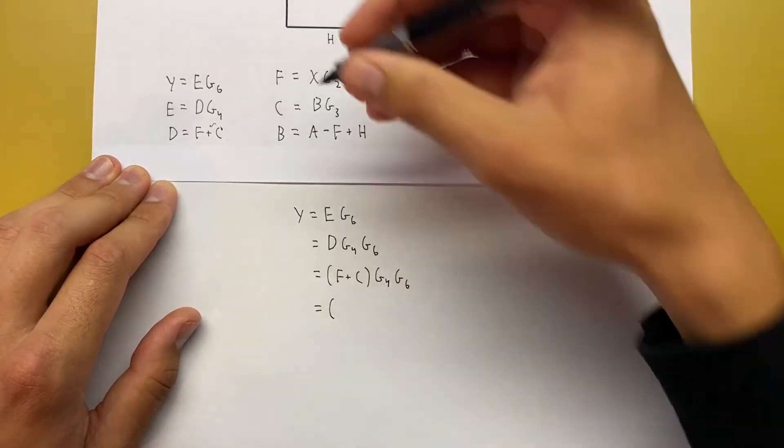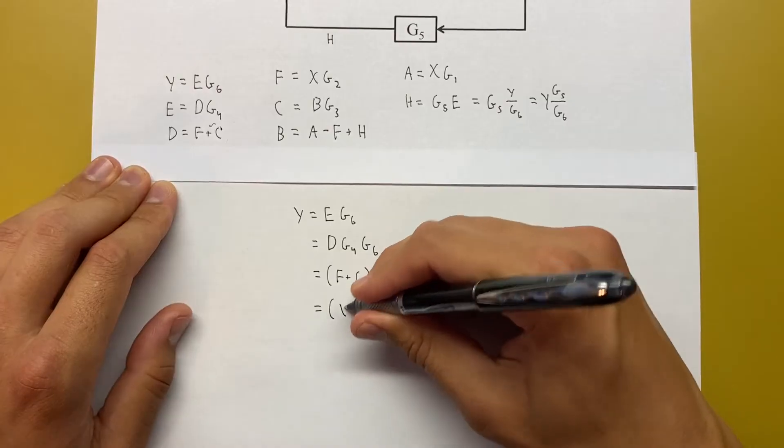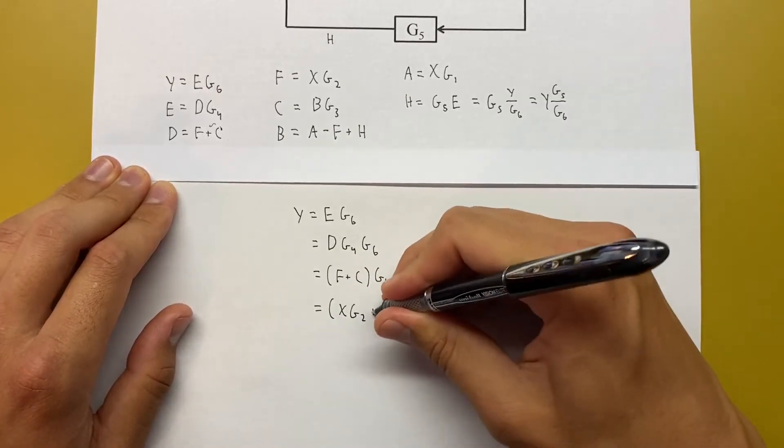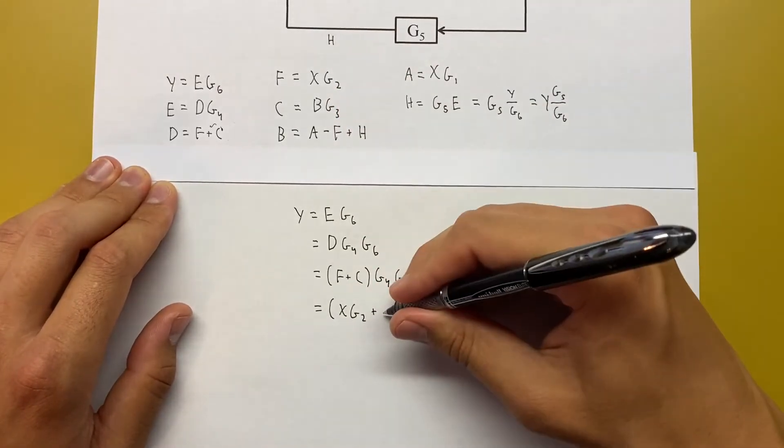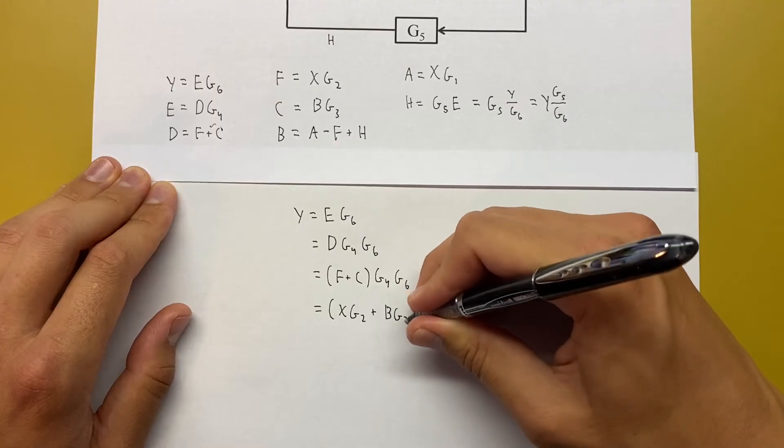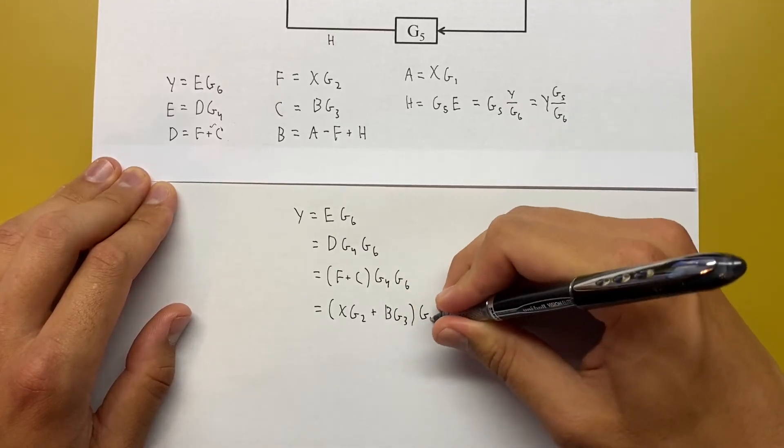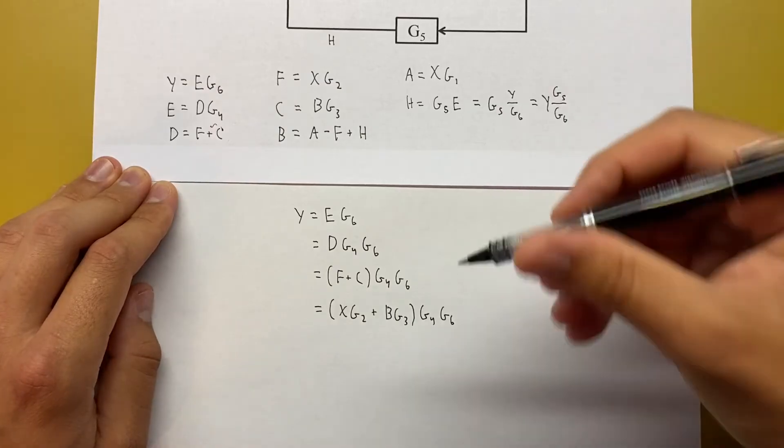Now we've got to replace this F and C. Luckily for us, F is just X G2, so that part's going to be done. And then C is B G3. We'll leave that G4 G6 at the end.